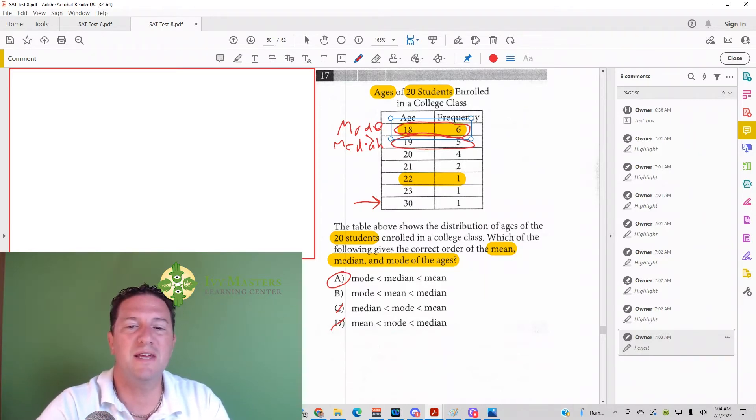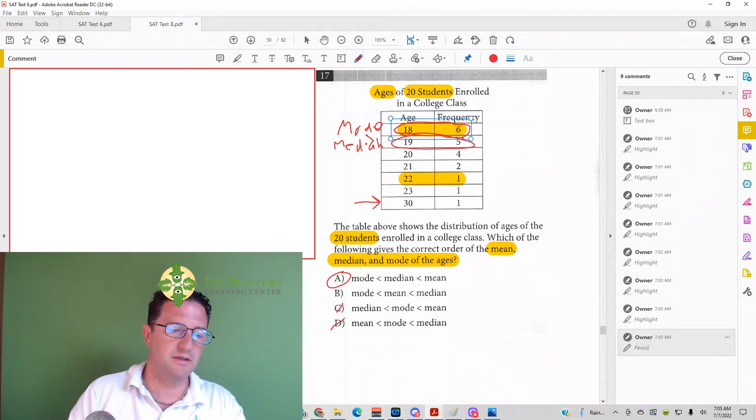It's really not necessary to solve exactly what the mean is here. If you did, what you would do is 18 times 6 plus 19 times 5 plus 20 times 4 plus 21 times 2 plus 22 plus 23 plus 30, and then divide it by 20 because there are 20 total students. Now you could do this whole thing with your calculator. So what I'll do is I'm going to write the steps on how you can do this with your calculator. I'm going to throw my glasses on because I'm blind now.